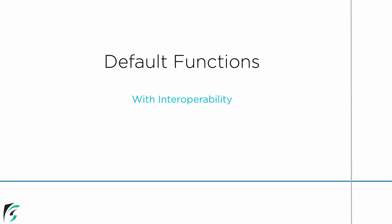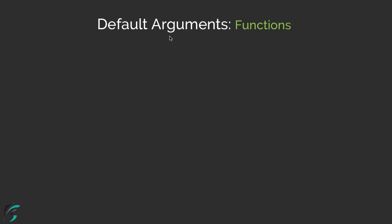Hi, this is Reng Siddharth and welcome to the next video of this Kotlin programming series. In this video we will learn about what we mean by default functions in Kotlin. We will learn this concept along with the concept of interoperability, so make sure you have watched the previous videos. First of all, what do we mean by default arguments in case of functions?